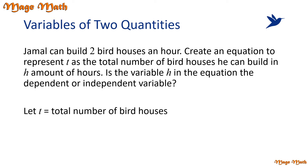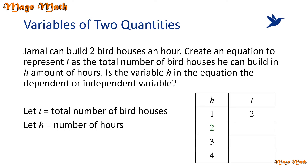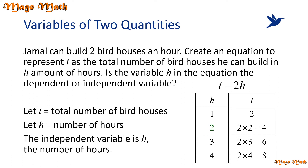Let t equal the total number of bird houses and let h equal the number of hours. If Jamal can build two bird houses in one hour, then in two hours he can build two times two, which is four bird houses. And in three hours he can build two times three, which is six bird houses. And so on. This means we find the total number of bird houses, t, by multiplying two times the number of hours, h. Our equation is t equals 2h. The independent variable is h, the number of hours, because the total number of bird houses depends on h. Nice job.